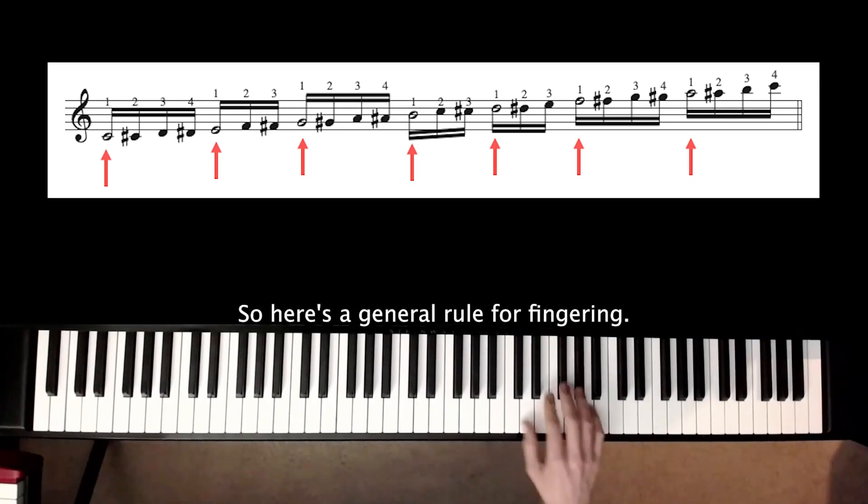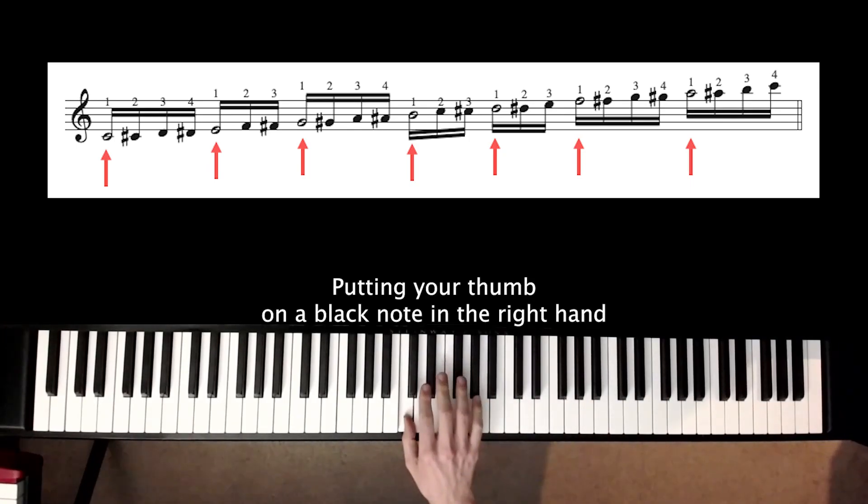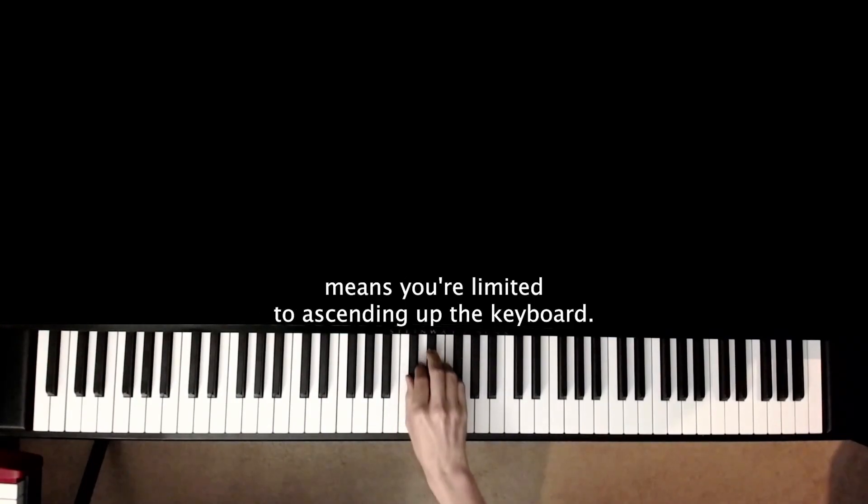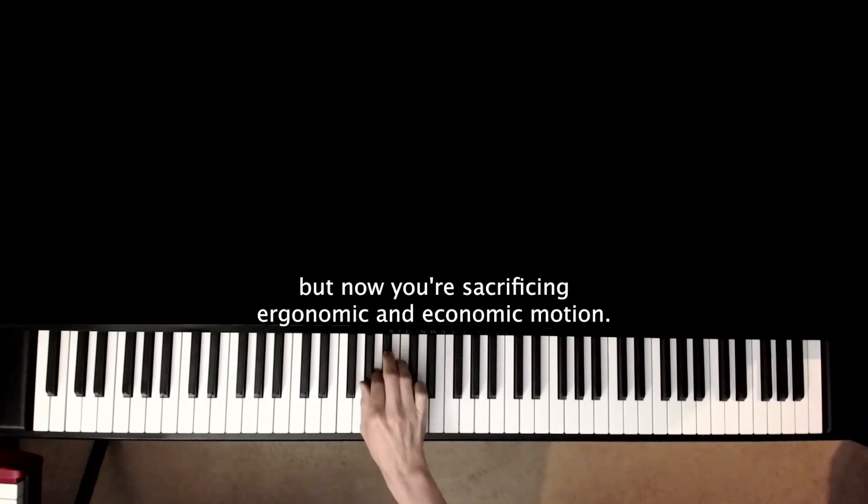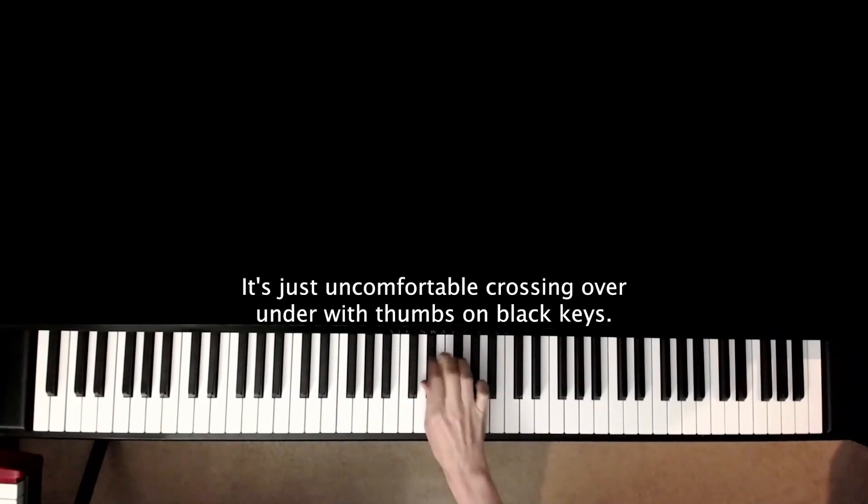So here's a general rule for fingering: putting your thumb on a black note in the right hand means you're limited to ascending up the keyboard. Not that you can't descend with your thumb on a black key, but you're sacrificing ergonomic and economic motion. It's just uncomfortable crossing over or under with thumbs on black keys.